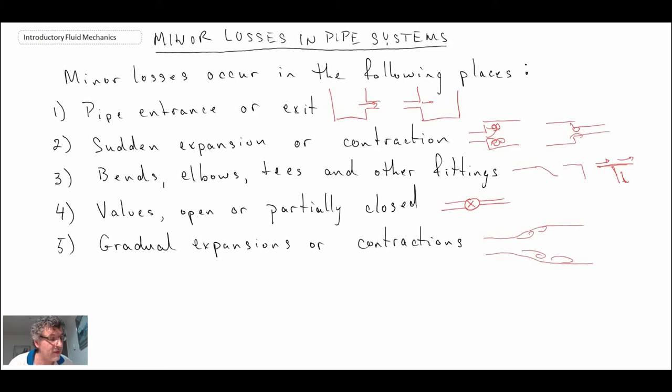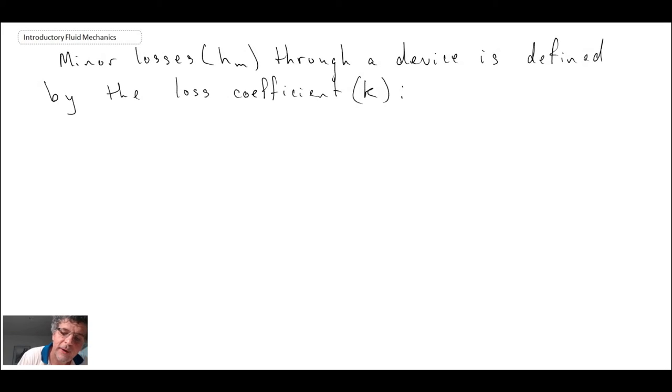So minor losses, we need a way to be able to account for all these different flow fields. And so what we do is we introduce a head loss associated with minor losses. So we introduce this loss coefficient k, and that is the way that we are quantifying minor losses. And note we have the subscript little m to denote its head drop due to a minor loss.